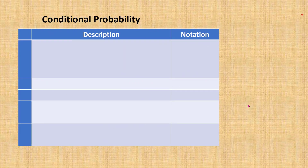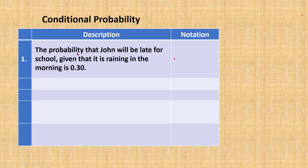Now, how do we identify conditional probability based on a description? For example, the probability that John will be late for school given that it is raining in the morning is 0.30. In this case, we are given that it is raining, so the event raining has already happened. The probability that John will be late for school is 0.3. So this is the conditional probability denoted as P(L|R), where L represents late and R represents raining. Therefore, P(L|R) = 0.30.